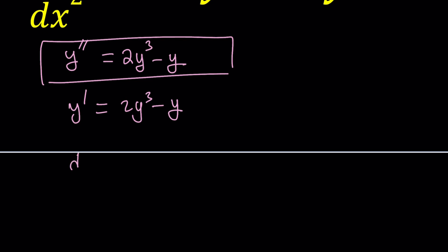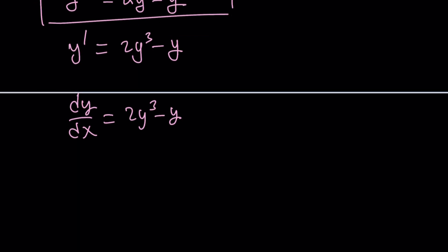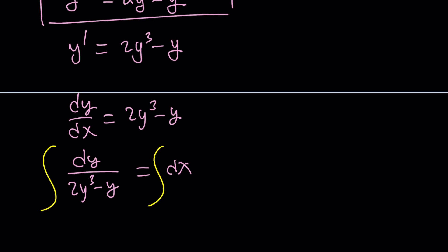y prime is dy over dx, and this equals 2y cubed minus y. You can multiply both sides by dx and divide by 2y cubed minus y, giving you dy over (2y cubed minus y) equals dx. Then integrate both sides — that gives you not necessarily y by itself, but at least some relation. It's a separable differential equation. You can separate the variables and integrate fairly easily using partial fractions, writing 2y cubed minus y as y times (2y squared minus 1).